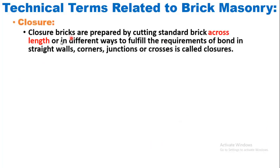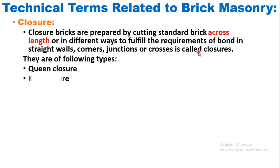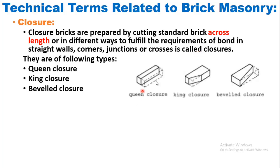What is a closer? Closers are prepared by cutting standard bricks across the length or in different ways to fulfill the requirements of bond in straight walls, corners, junctions, or crosses. They are of the following types: queen closer, king closer, and beveled closer. In a queen closer, the length of a brick is cut into two, and closers are made along the length. In a king closer, one edge of a brick is cut according to the requirement of the wall. The example of a beveled closer is also shown.